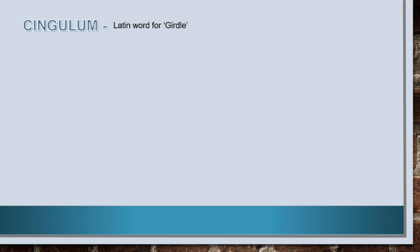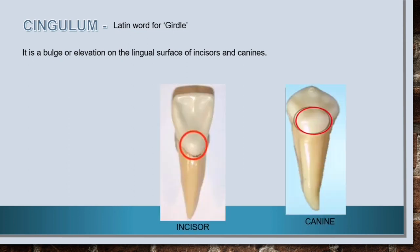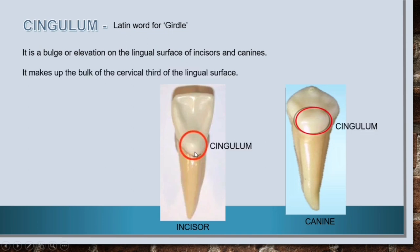Now let's have a look at cingulum. Cingulum is a Latin word for girdle, which means a belt or cord worn around the waist. Cingulum is a bulge or elevation on the lingual surface of incisors and canines. It makes up the bulk of the cervical third of the lingual surface and is present in incisors and canines.